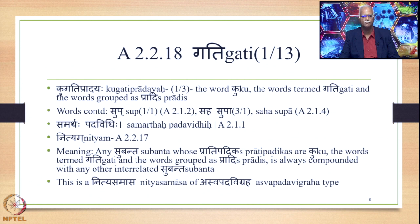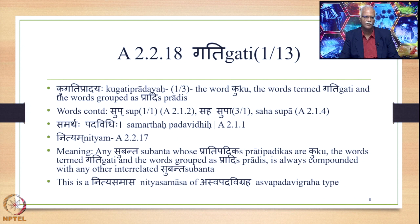The Sutra is Kugatip Pradayaha, which is Prathama Bahuvachana, meaning the word Ku, the words termed Gati, and the words grouped as Pradhis. Sup and Sahasupa are the words continued. The meaning of the Sutra is: any Subanta whose Pratipadikas are Ku, words termed Gati, and words grouped as Pradhis is always compounded with any other interrelated Subanta. This is a Nitya Samasa of a Swapad Vigraha type.